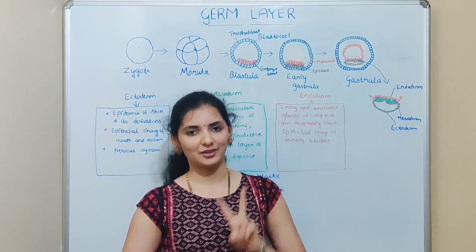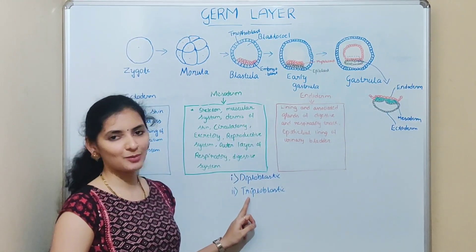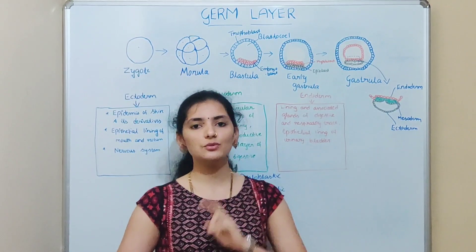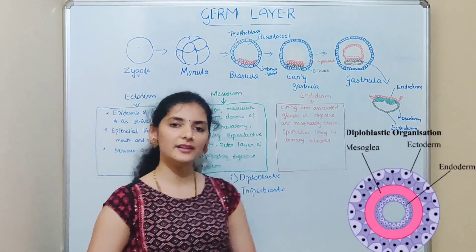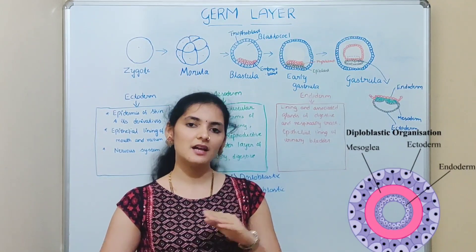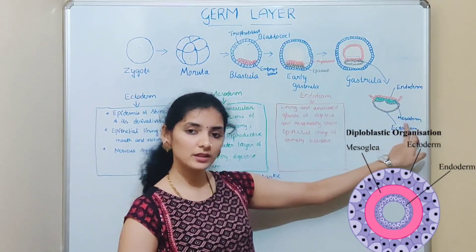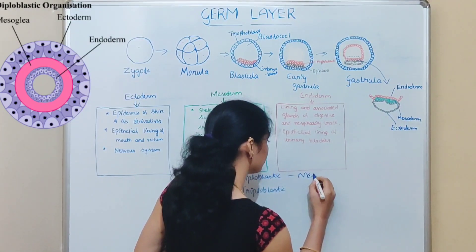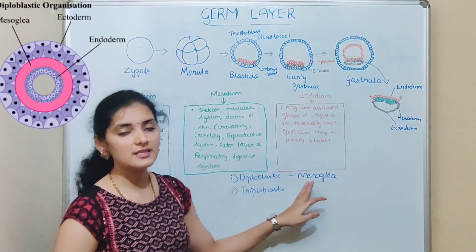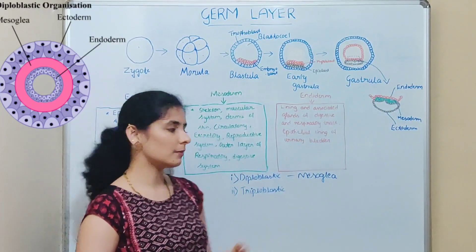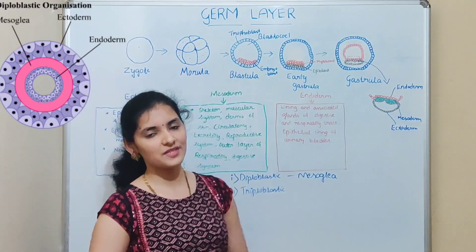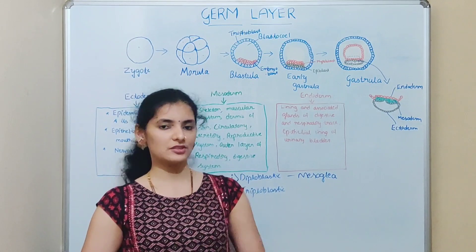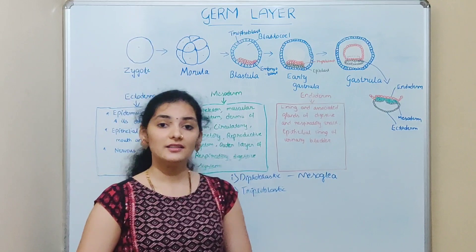Based on the number of germ layers, multicellular organisms are divided into two types: diploblastic and triploblastic. Diploblastic animals, as the name indicates, have only two germ layers — the outer ectoderm and inner endoderm — so the mesoderm layer is totally absent. However, these animals do have a layer called mesoglea, which is a gelatinous acellular layer present between the ectoderm and endoderm. Examples of diploblastic organisms include Cnidaria and Ctenophora.